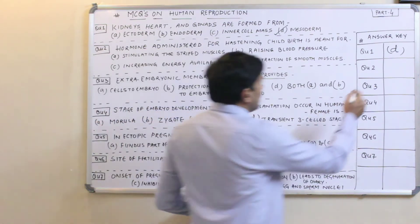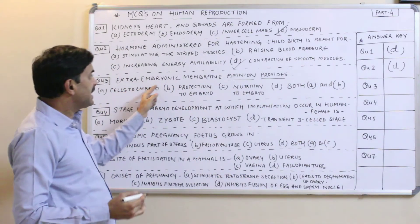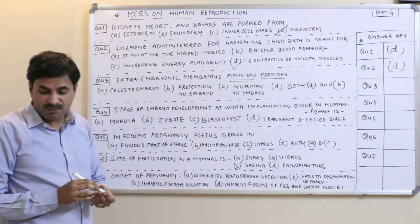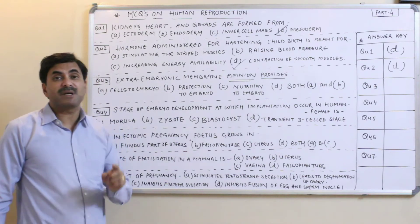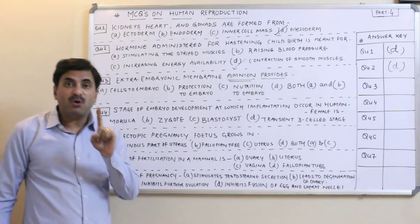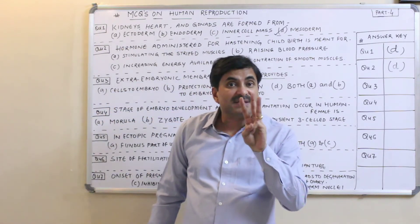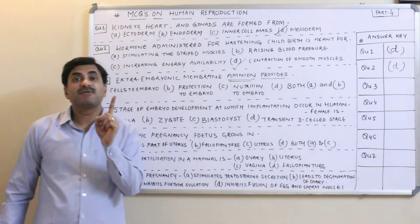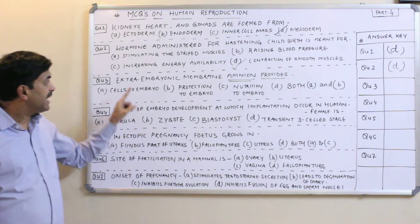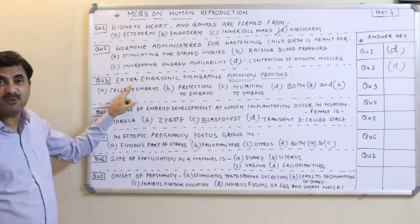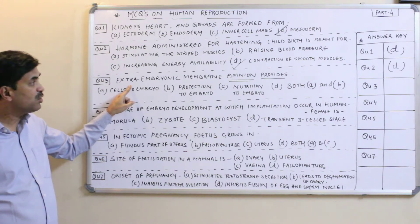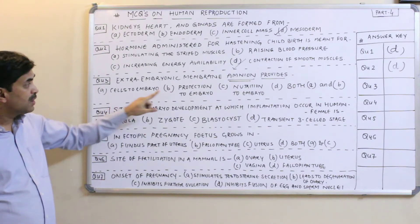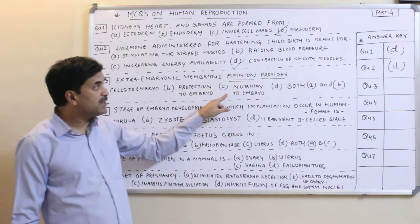Question number three: extra-embryonic membrane amnion provides what? You must know that the extra-embryonic membranes are four: amnion, chorion, allantois, and yolk sac. The embryonic germ layers are three: ectoderm, mesoderm, and endoderm — don't confuse these two. The options are: cells to the embryo, protection to the embryo, nutrition to the embryo, or both A and B.